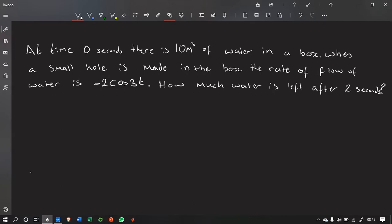So, here's a question. At time 0 seconds, there is 10 metres cubed of water in a box. When a small hole is made in a box, the rate of flow of water is minus 2 cos 3t. How much water is left after 2 seconds?